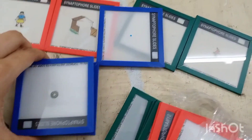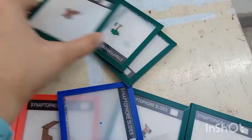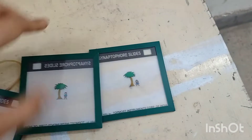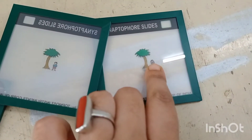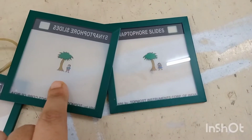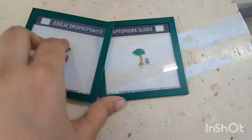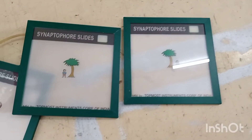Now coming to other slides — we have some stereopsis slides also, though I am not currently having those. Here I am showing the fusion slides. These are used for testing NFV and PFV. Here are two trees; you can see one boy and one girl standing. When you fuse with both eyes you will see one single tree and one boy and one girl.